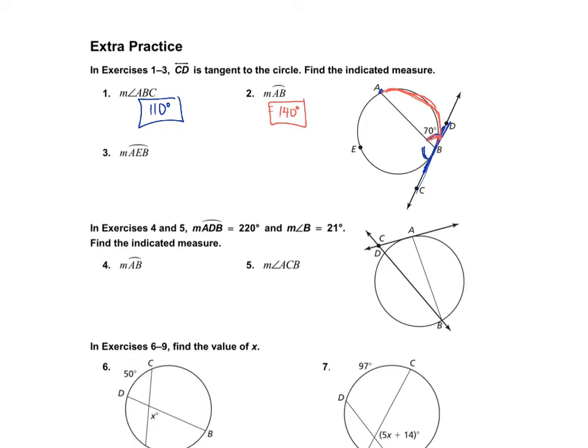Then we need arc AEB on this side. Since the angle in here is 110°, this arc will be double that — because the angle is half the arc — so arc AEB will be 220 degrees.